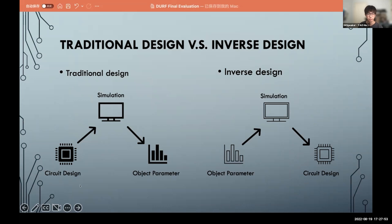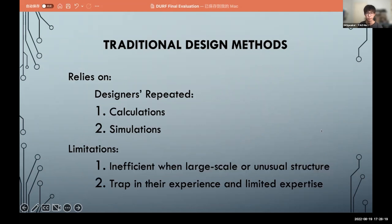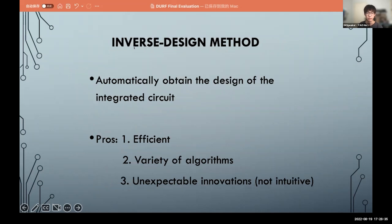So it's different from traditional designs. Traditional design is the designer should design the circuit and do a simulation and gather parameters. If this parameter is different from the objective parameter, it will modify the circuit design and do simulation again and again. But with inverse design, we just need to set our objective parameter and do the simulation, and the computer will tell us how to design the circuit. So traditional design method relies on the designer's repeated calculations and simulations, so it is inefficient. And sometimes the designers will trap in their experience and expertise, but inverse design is automatically obtained.